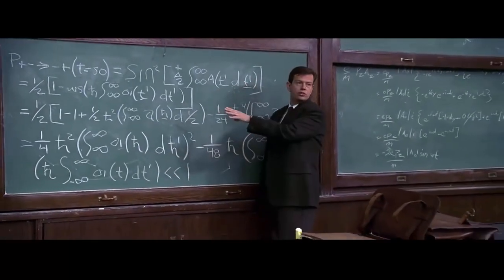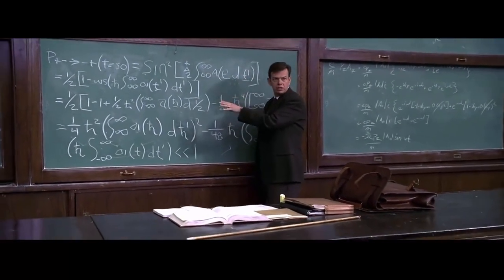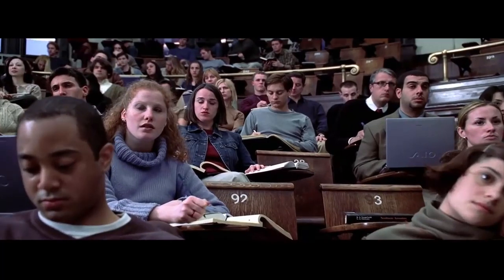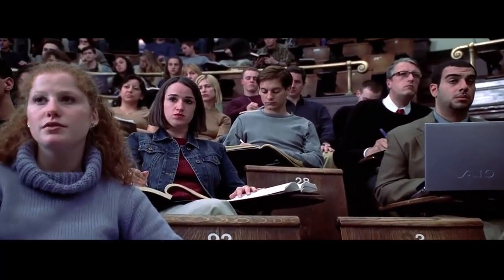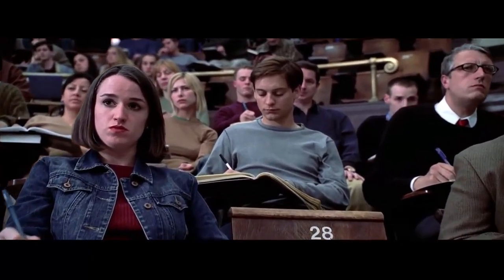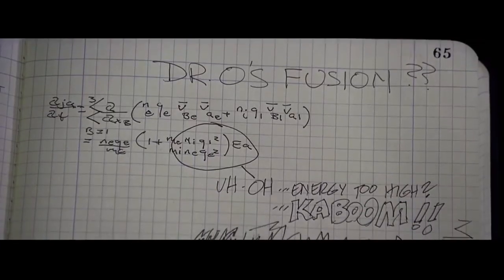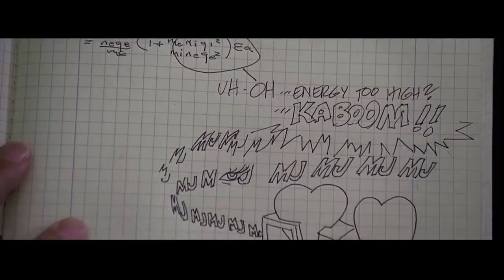Thus, the second order term in the expansion of the exact order is identical to the second order calculated from first order perturbation energy. Since we are free to choose an arbitrary origin for our energy, we choose any combination of the basic vectors.